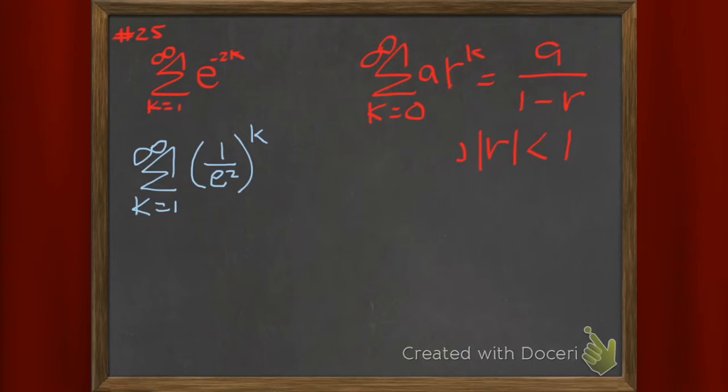Convince yourself that 1 over e squared is smaller than 1. Then I got to get it in the form because my index isn't starting at 0.